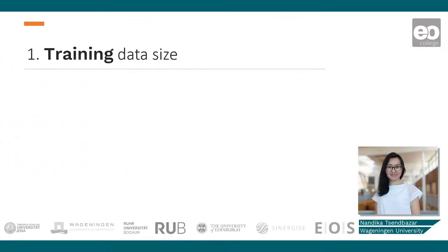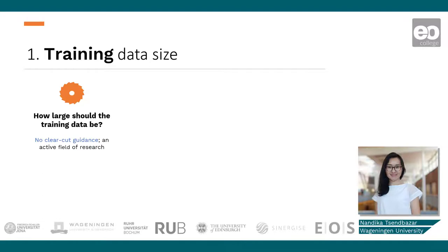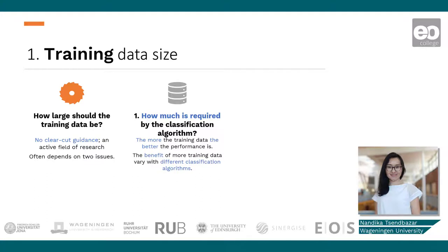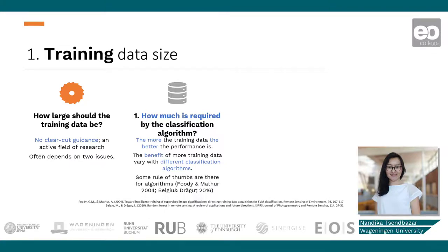Next, we need to define how large the training data should be. The answer is not very straightforward because this is still an active field of research. The sample size for training data may depend on two factors. Firstly, how much training data is required by the classification algorithm. Generally, the more training data you have, the better the performance, but the gain in performance with increased training data may differ depending on the classification algorithm. Some algorithms gain well with increased training data, while the gain may not be apparent for others. For commonly used algorithms, there are some rules of thumb that we can follow.